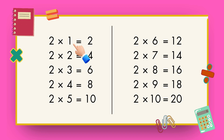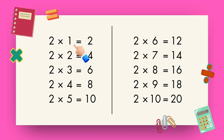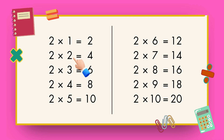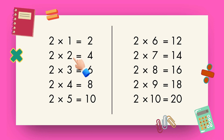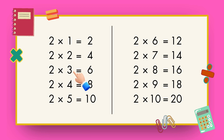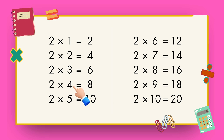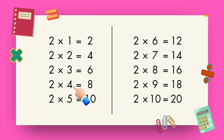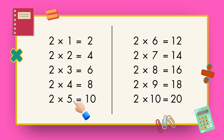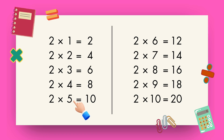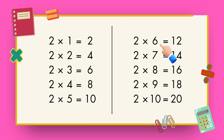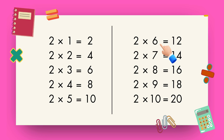2 1s are 2, 2 2s are 4, 2 3s are 6, 2 4s are 8, 2 5s are 10, 2 6s are 12.